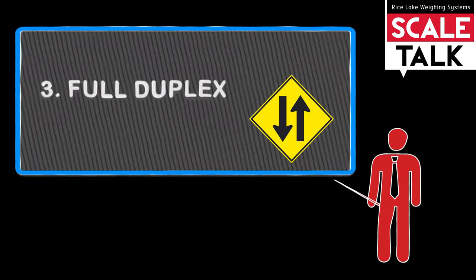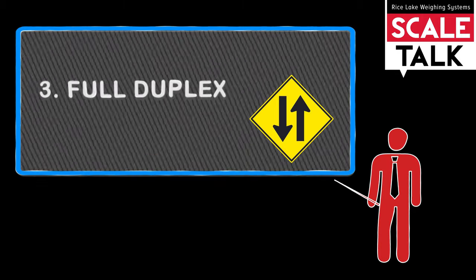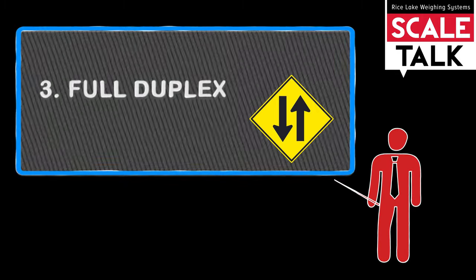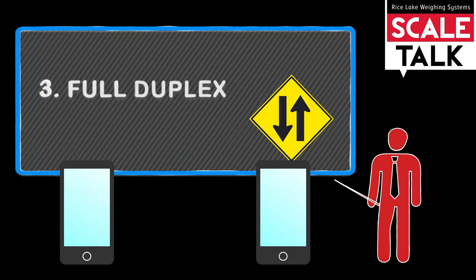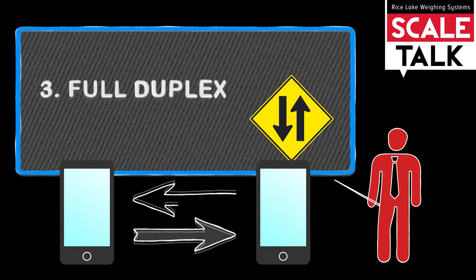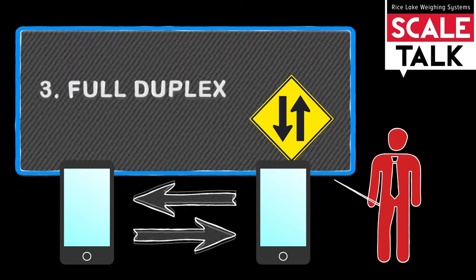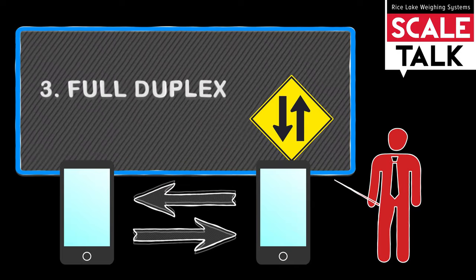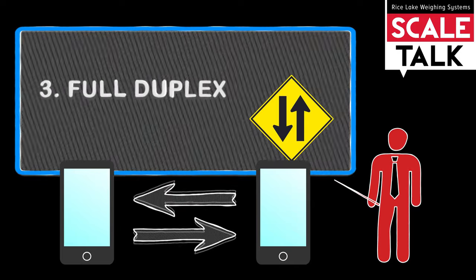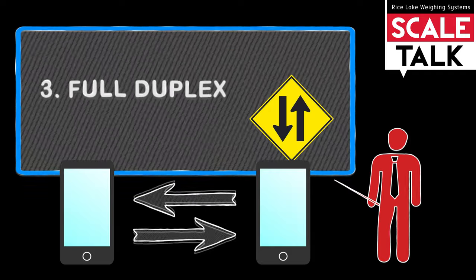In full-duplex, both sides can talk and listen at the same time. An example of this would be a phone. Both sides can talk and listen, transmit and receive, at the same time. You might hear background noise, such as a dog barking as you were talking to someone on the phone. That's full-duplex.